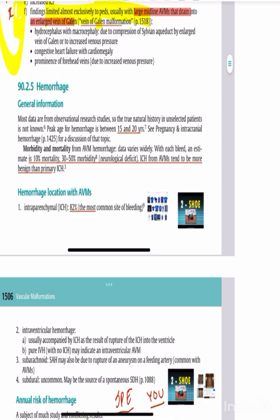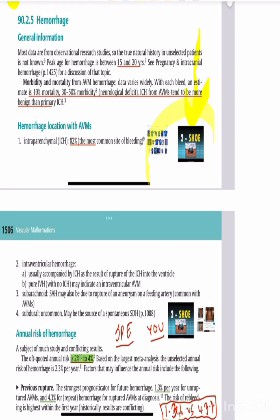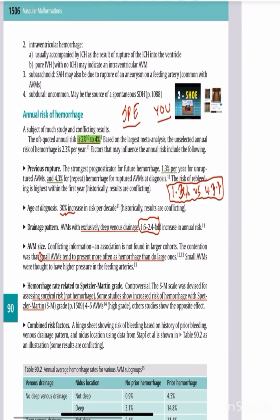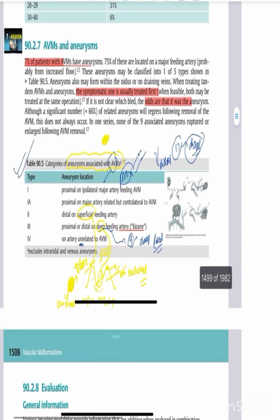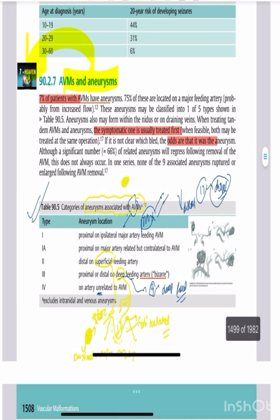AVMs can be associated with aneurysms. The aneurysm can be proximal in a major feeding artery, superficial, or in a deep feeding artery. The main feeding artery aneurysms are classified as type 1A.